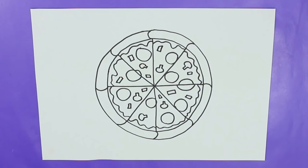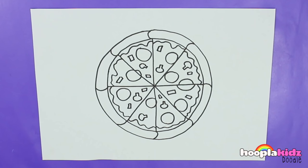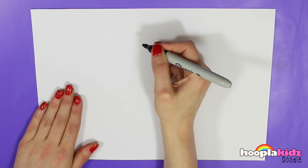Hello everyone and welcome to Hoopla Kids Doodle. Today we are going to be drawing a pizza. Doesn't it look fantastic? All you'll need is a pen and a piece of paper and some coloring pens for the end.